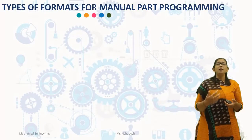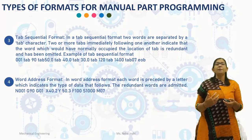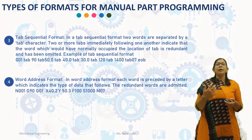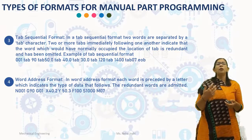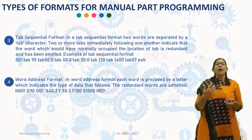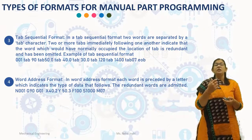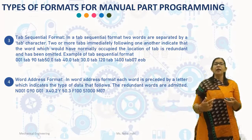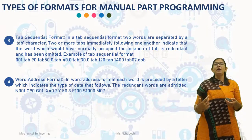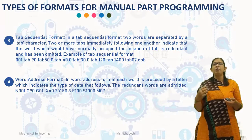The next programming format is tab sequential format. In tab sequential format, two words are separated by a tab character. Two or more tabs immediately following one another indicate that the word which would have normally occupied that location is redundant and has been omitted. An example of tab sequential format: 001, tab, 90, tab, 50, tab, 40, tab, 30, tab, 120, tab, 1400, tab, 07, and then end of block.